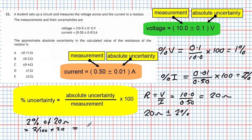Two percent of 20 ohms is the same as 2 over 100 multiplied by 20, which gives a value of 0.4. So the resistor has a calculated value of 20 ohms and the absolute uncertainty, calculated approximately using the two percent value, is 20 ohms plus or minus 0.4 ohms. So the answer is C.